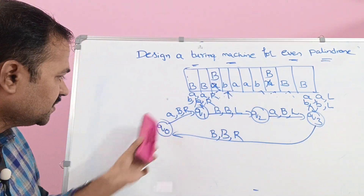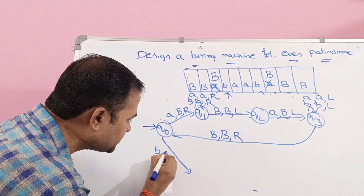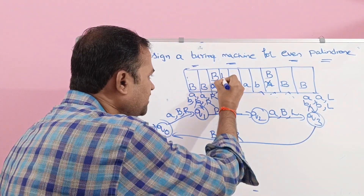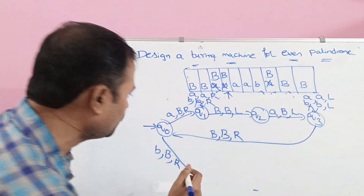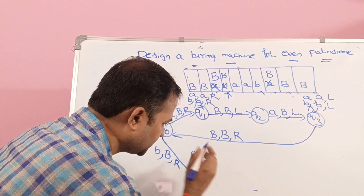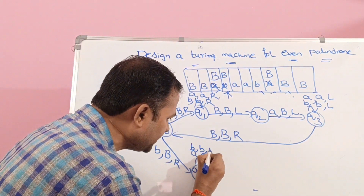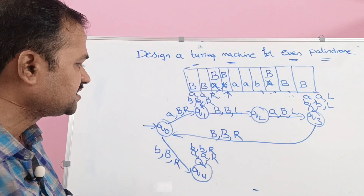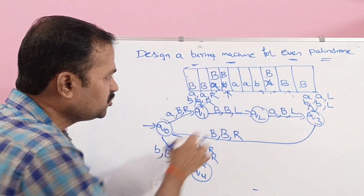Here we have B. If we read B on Q0, replace it with a capital B (blank symbol marker) and move the head one position to the right. Replace this B with capital B and move the head towards the right until we get capital B. The next state is Q4. On Q4, if we apply any number of A's, keep them the same and move the head one position to the right. Likewise for B's, keep the symbol and move right. Then this B is replaced with a blank symbol and we move towards the right.